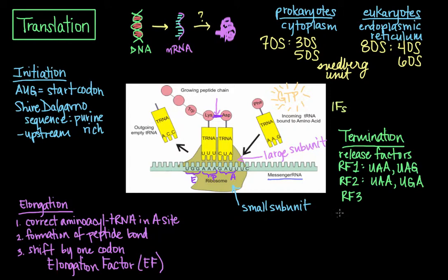Now, ribosome recycling is the step that's responsible for the disassembly of the post-termination ribosomal complex. And so, once the nascent or new protein is released in termination, ribosome recycling factor and elongation factor function to release the mRNA and tRNAs from the ribosomes and to disassociate the ribosome itself into the small and large subunits. That way, all translational components are now free for additional rounds of translation. Thank you.